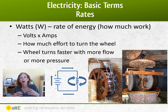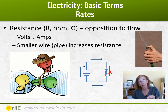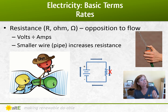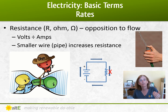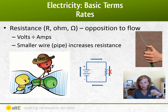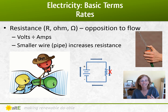Watts is how much energy is needed in order to accomplish that work. The fourth term that comes into play is resistance, which is the opposition to flow — it's volts divided by amps. Back to the water analogy: the smaller the pipe, the less flow you're going to have. With electricity, the smaller the wire or the greater the resistance, you're going to have less flow. If you put your finger over a hose or kink the hose, you're going to be blocking the flow. Same with resistance — ohms will reduce the flow of amps.